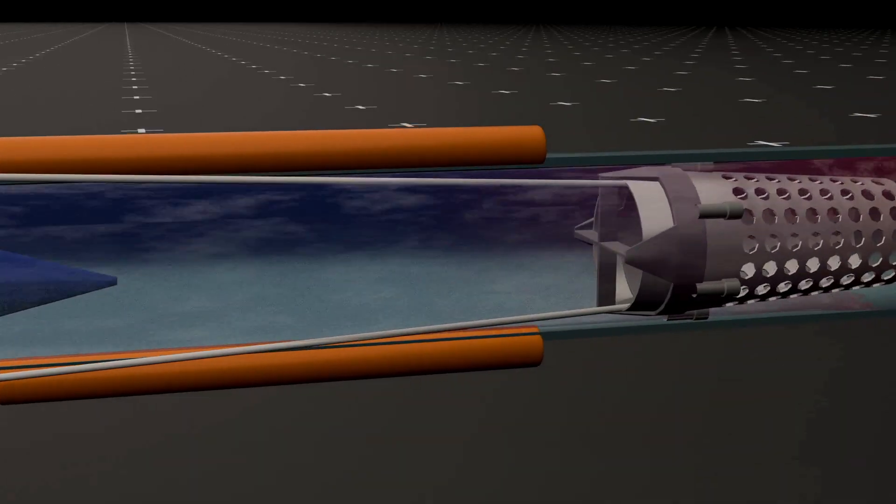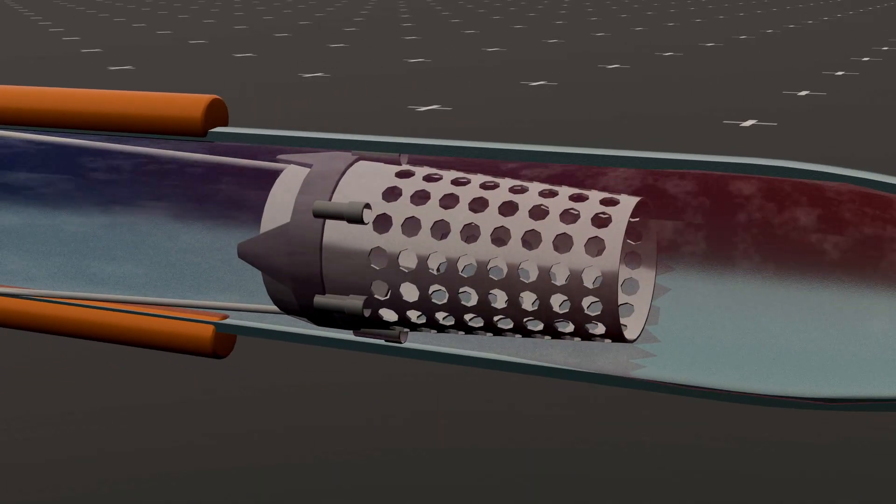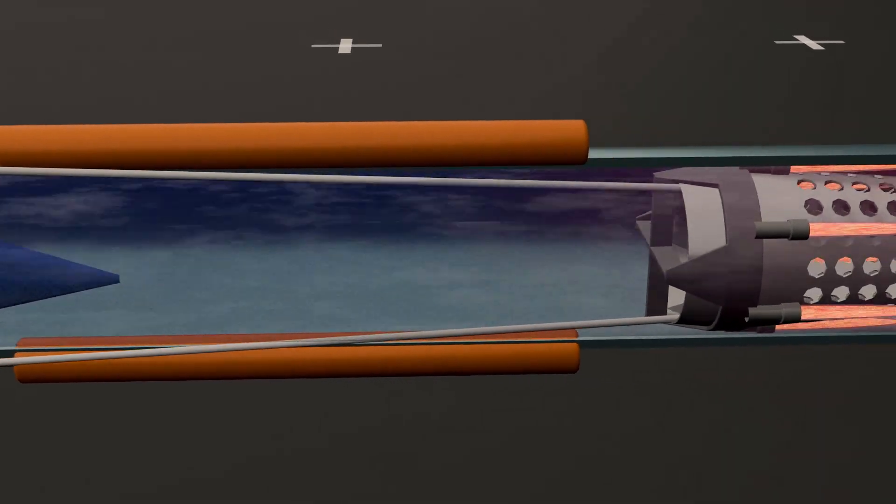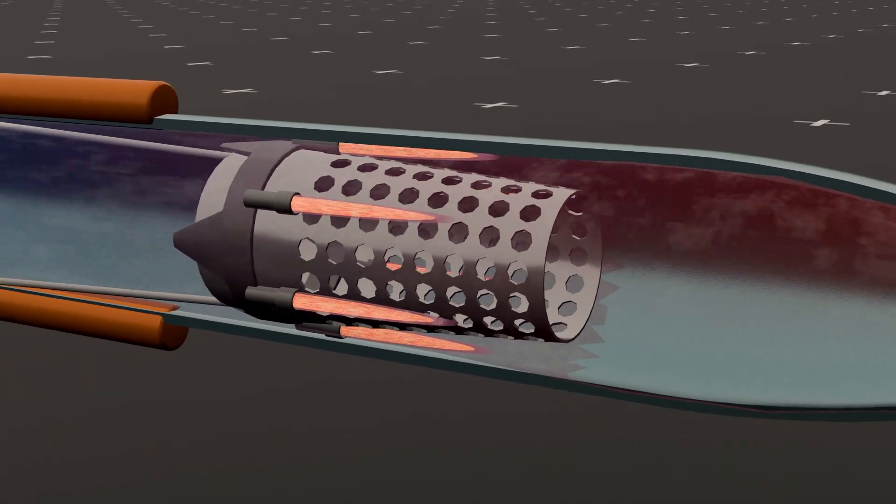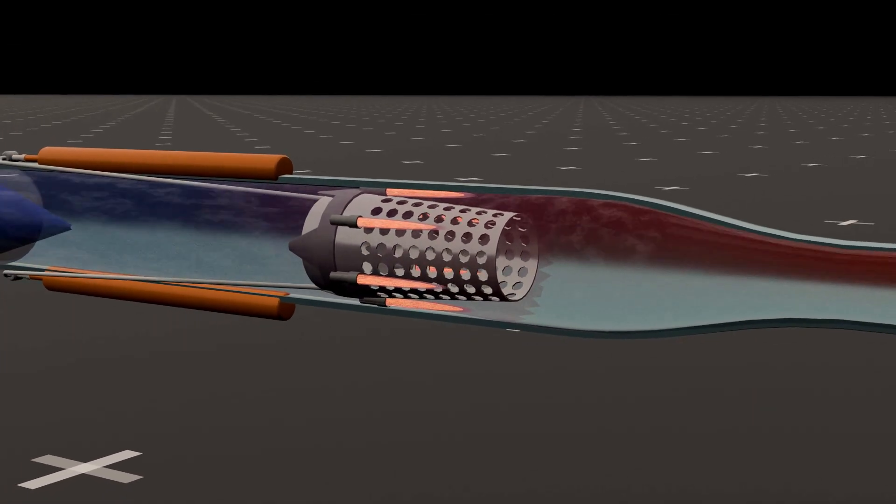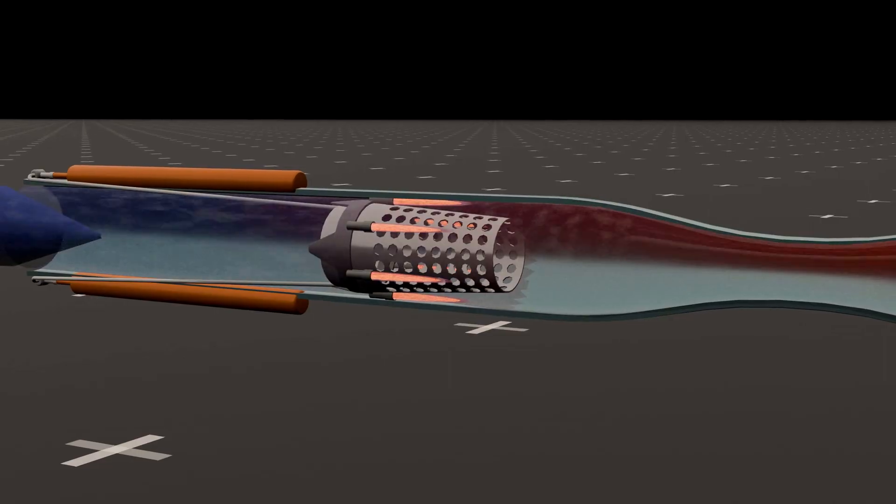This high-pressure air is directed towards the combustion chamber, where it mixes with fuel, typically hydrogen, and combusts. The resulting gases expand rapidly and exit the missile at high velocity, generating thrust according to Newton's third law of motion.